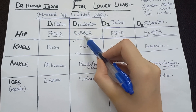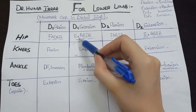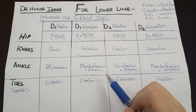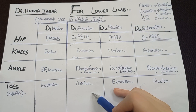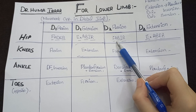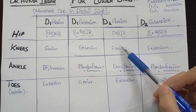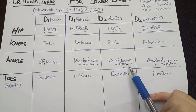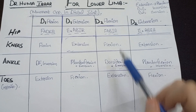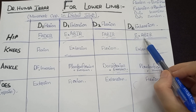Hip D1 extension: extension, abduction, and internal rotation. Knee: extension — automatically follows hip. Ankle: plantarflexion and eversion. Toes: flexion — opposite to hip extension. Hip D2 flexion — remember with 'FABER': flexion, abduction, and internal rotation. Knee: flexion — follows hip. Ankle: dorsiflexion and eversion. Toes: extension — opposite to flexion.